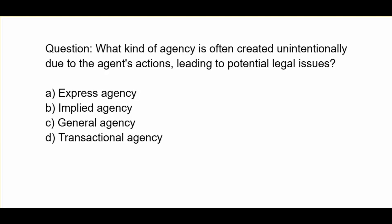What kind of agency is often created unintentionally due to the agent's actions leading to potential legal issues? A. Express agency. B. Implied agency. C. General agency. D. Transactional agency.